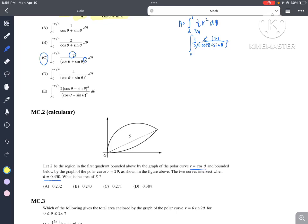So here we have s, a region in the first quadrant bounded by the graph of the curve r equal to cosine theta and below by the curve r equal to 2 theta. And the curves intersect over here. What's the area of s?